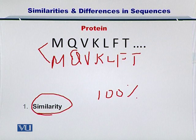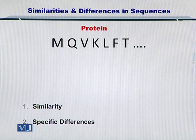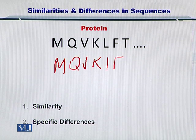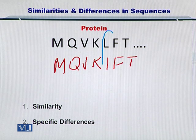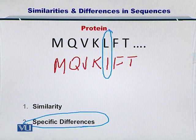However, it can be the case that you are trying to compare two sequences wherein there are differences in their amino acids or nucleotides. For specific differences, if you have another protein sequence, you can argue that there is a difference between these two sequences in leucine and isoleucine. By looking at specific differences, you can see how two sequences differ from each other, and in this case the similarity will obviously be less than 100%.